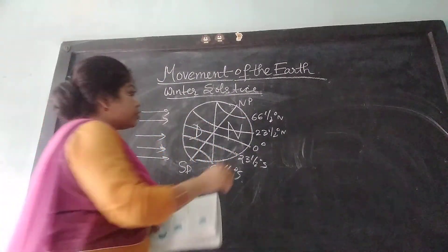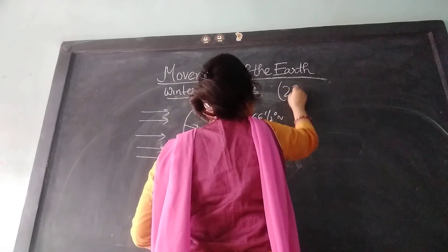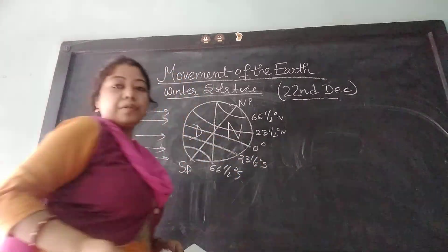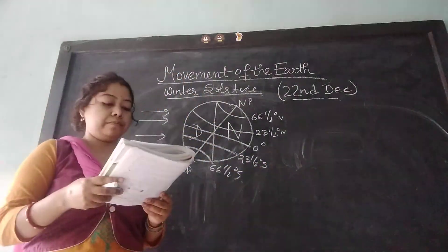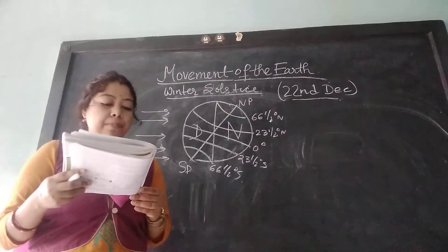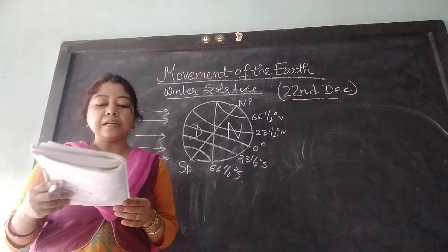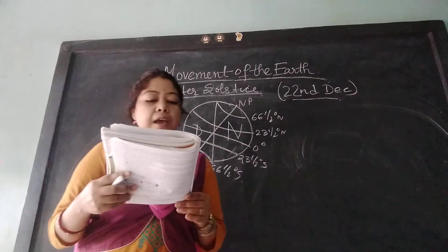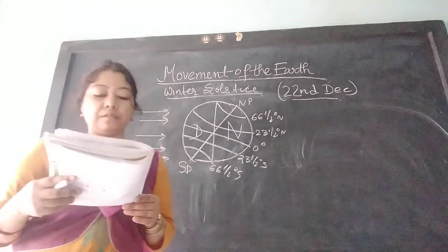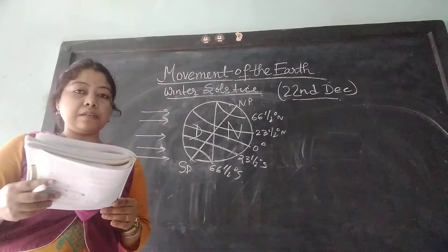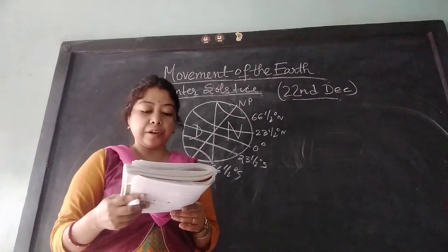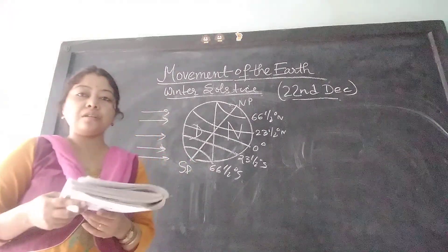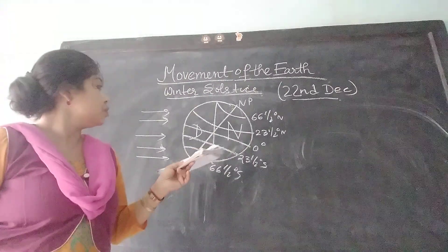Winter solstice occurs on 22nd December. After 21st September, as the Earth continues to revolve, the Sun appears to move further southward and due to the south of the equator. On 22nd December, the Sun appears vertically overhead at noon on the Tropic of Capricorn. At this position, the South Pole leans towards the Sun.